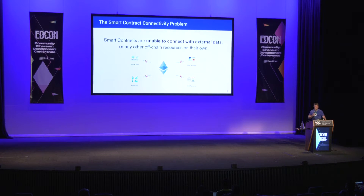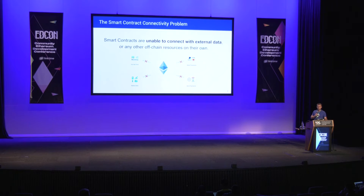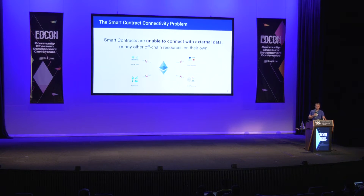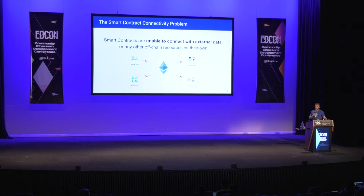With the current state of smart contracts, there's a connectivity issue. Natively, they can't communicate with off-chain endpoints, APIs, and payment systems. With the advent of Ethereum and all the different use cases that scriptable smart contracts have provided, we really need to access those different data points and payment systems for smart contracts to have meaningful events in the real world.